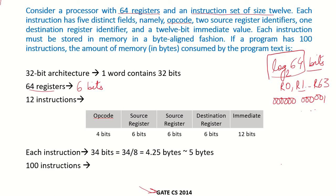We have an instruction set of size 12, meaning the total number of different instructions present in the instruction set is 12. So how will we encode the opcode? Each instruction will have an opcode, and we take log₂(12) and take the ceiling. This results in 4 bits for the opcode to specify each instruction.